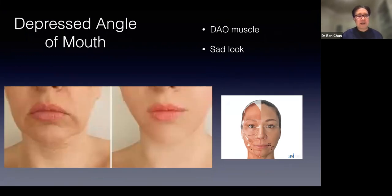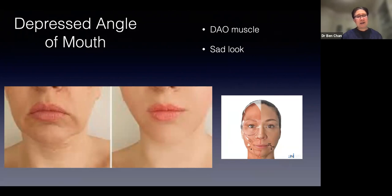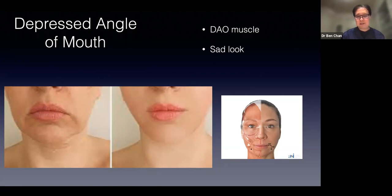The depressed angle of the mouth (DAO — depressor anguli oris) gives patients a sad look. Dentists will see these patients frequently. The injection is not too difficult — only two units each side, a very quick, simple, not very painful procedure. You just target the DAO and inject. There are essentially no complications if injected accurately, and any side effects disappear within three months anyway.